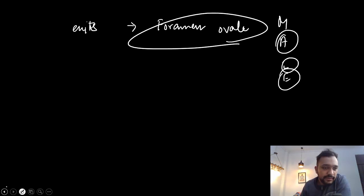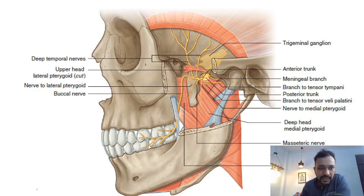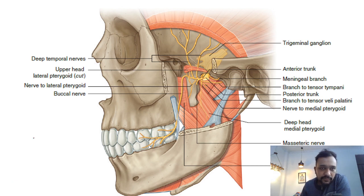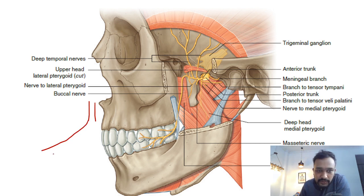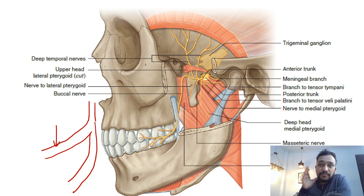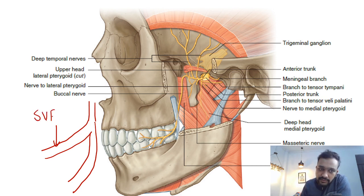The mandibular nerve has three parts: one is the trunk, then it divides into two parts — the anterior division and the posterior division. The anterior division supplies the muscles of mastication, which are part of the special visceral efferent column.